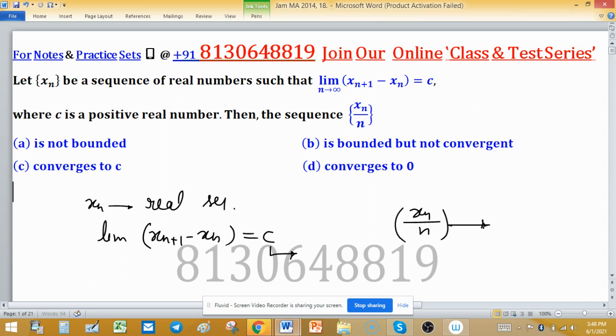We have to tell about the limit because a few options are for the limiting point. Option C says converges to C, and option D says converges to 0. If we can find the limit, then we can easily discard one of them, and if the limit exists, then we can determine if the sequence is bounded.